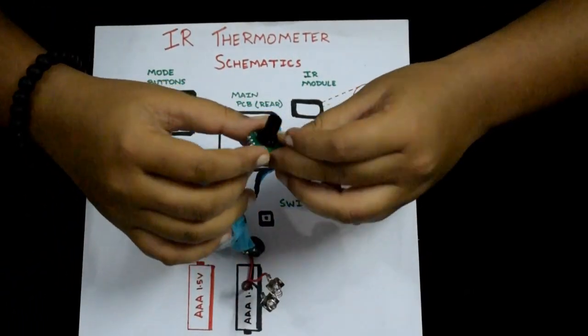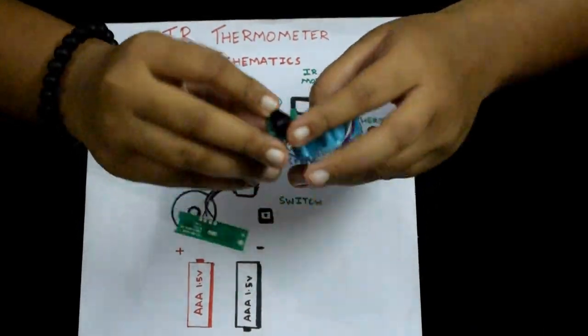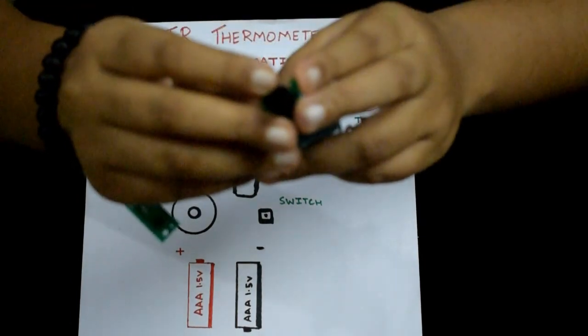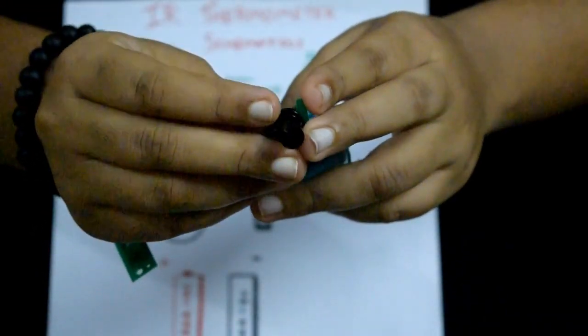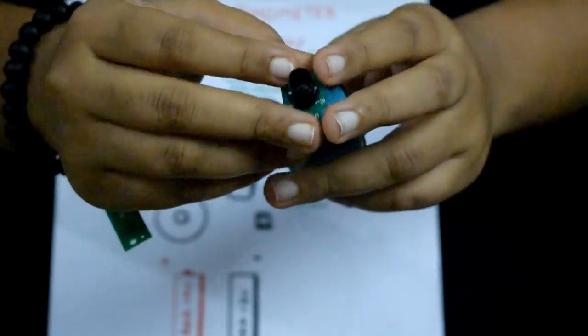And this is the main heart of what the IR thermometer works. This has a lens inside. I'm sure you're able to see this—can you see this? The lens focuses the IR radiation into the thermistor. There's a thermistor inside this module.